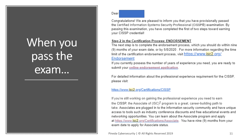The next step is the endorsement. You have to create an account on ISC² and match it with the email you used, then look for an endorser. If you know someone who is CISSP certified, you can get their certification number and input it. If you don't have any endorsers, you can ask ISC² to find someone, but you'll need to provide your work experience and proof that you worked for the required time.